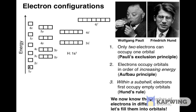For the next element, helium, atomic number 2, there are two electrons. According to the Aufbau principle, both of them occupy the only orbital in the 1s subshell. Pauli's exclusion principle allows it, and because there is only one orbital in an s subshell, placing both electrons there also satisfies Hund's rule. The electron configuration for helium is written as 1s², where the superscript indicates that there are two electrons in the 1s subshell.